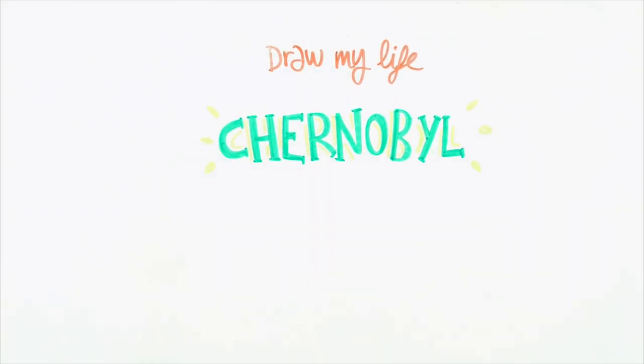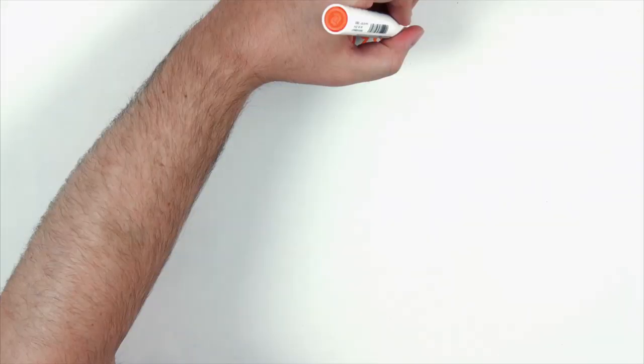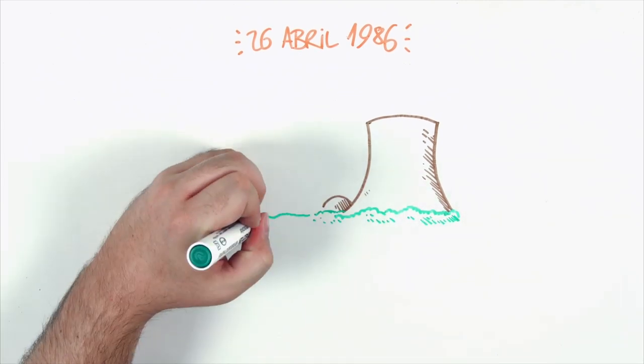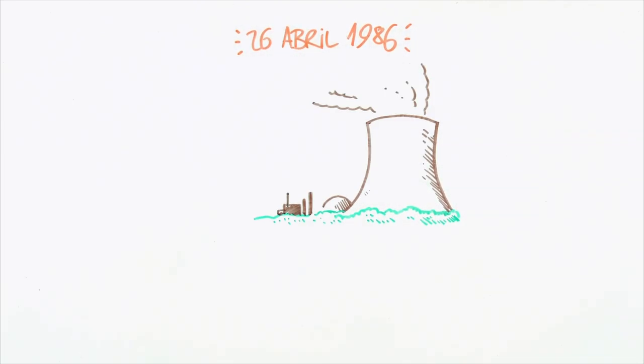Welcome to this Draw My Life about Chernobyl. Probably most of you don't know anything about what happened on April 26th of 1986, but that particular day, the worst accident in the history of nuclear power occurred in Chernobyl, Ukraine.